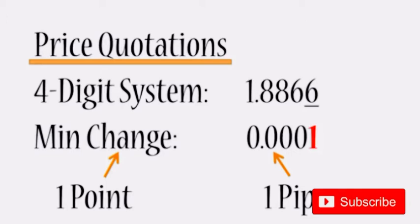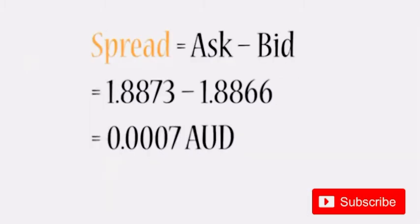That means one point is exactly equal to one pip, and that's going to be the case for every single currency pair if it is quoted in the four-digit quoting system.